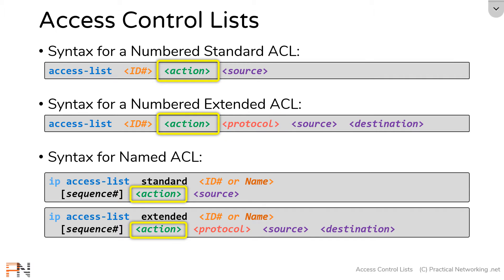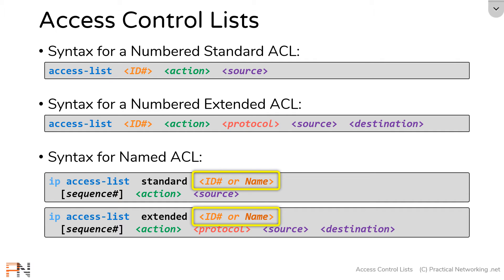The action in all cases is exactly the same — you still have three options: remark, permit, or deny. The ID number field is just a little bit different. In a numbered access list, the ID number had to be a digit, had to be a number. Whereas in a named access list, you can specify the ID as a number or a name, which means you can name your access list something like 'giraffe' or 'penguin' or whatever you'd like.